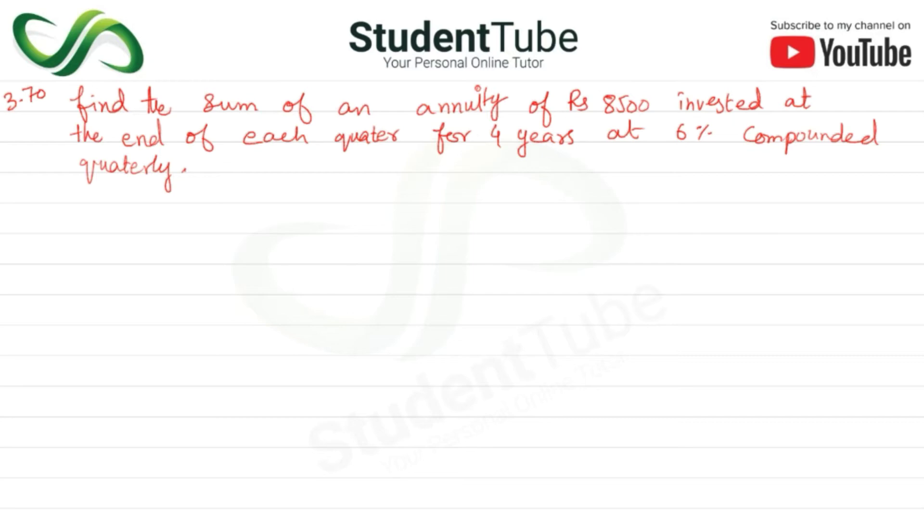invested at the end of each quarter for 4 years at 6% compounded quarterly. Sum of annuity means we have to find future value. Formula is FV = R[(1+r)^n - 1]/r.